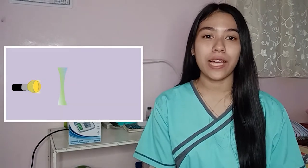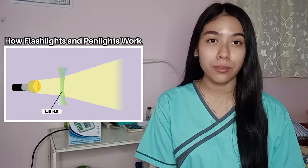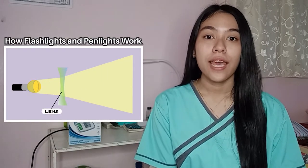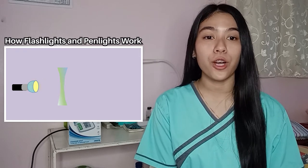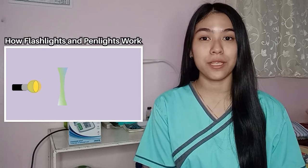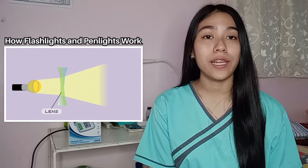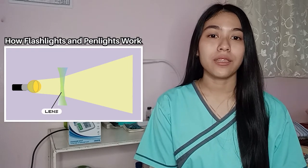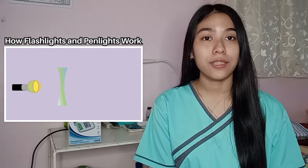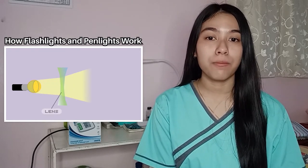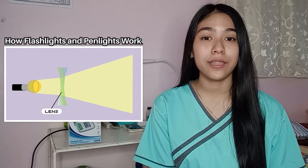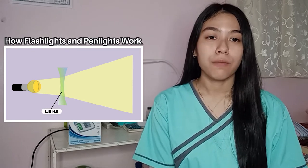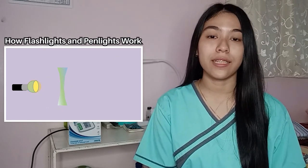How do flashlight and pen light work? When the switch of a flashlight is pushed into the on position, it makes contact between two contact strips, which begin a flow of electricity powered from the battery. When activated by electricity, the tungsten filament or lead in the lamp begins to glow, producing light that is visible.